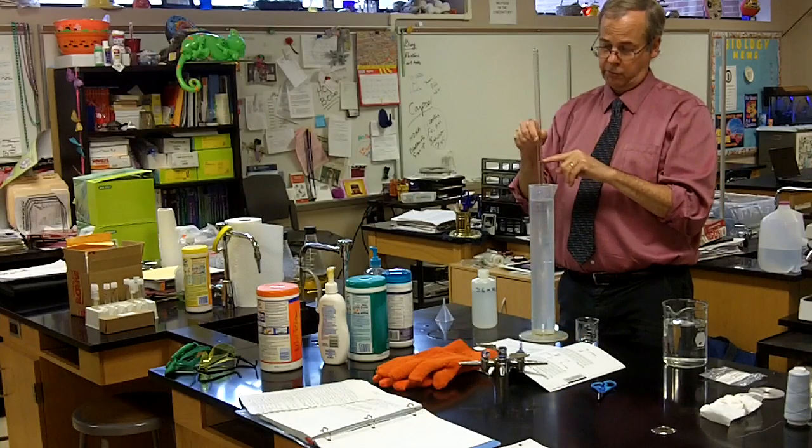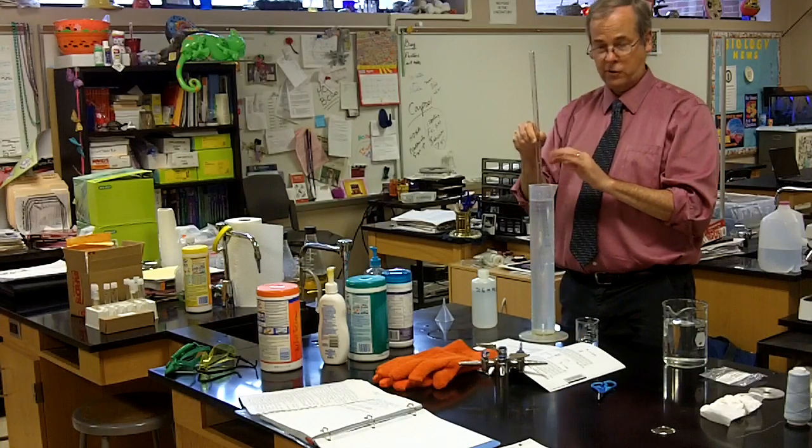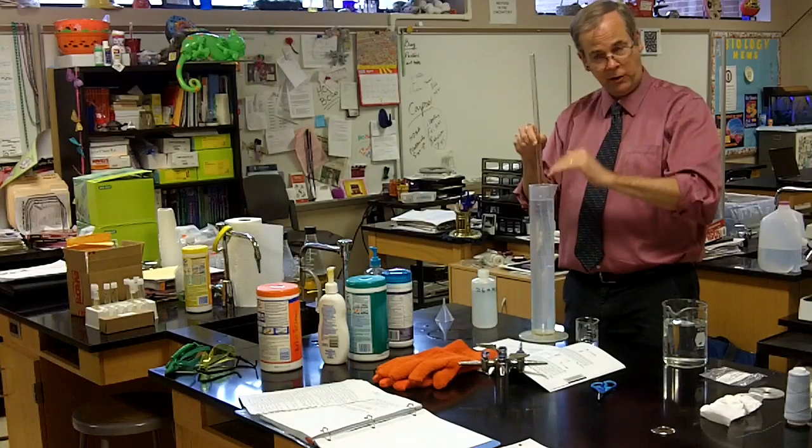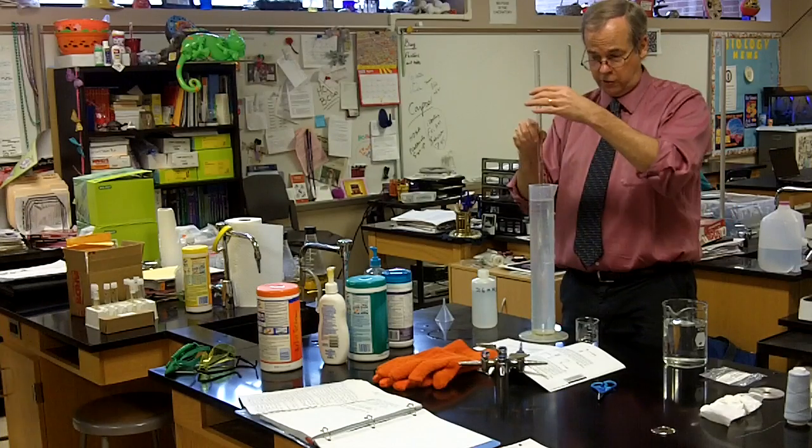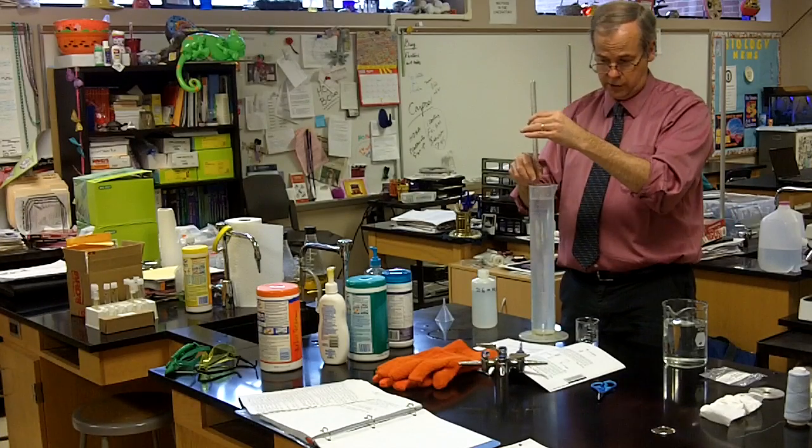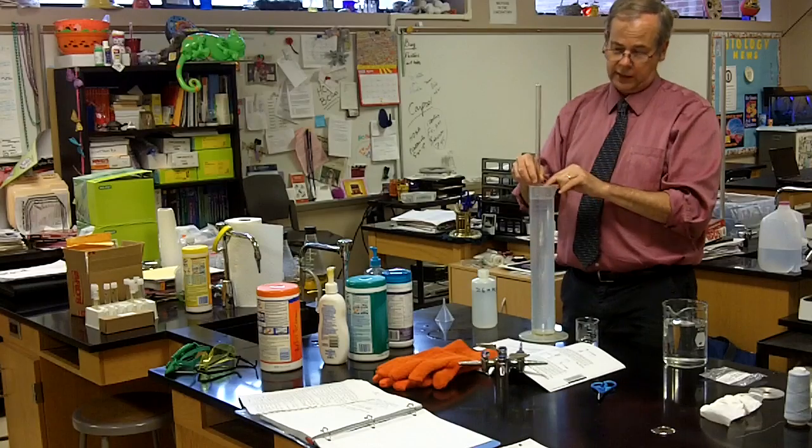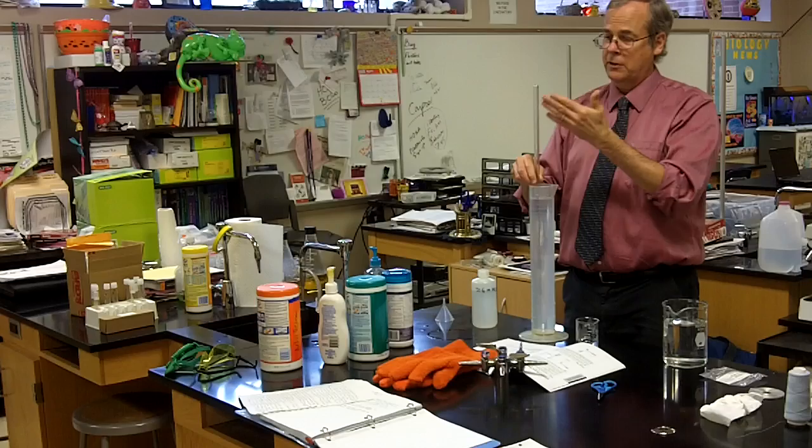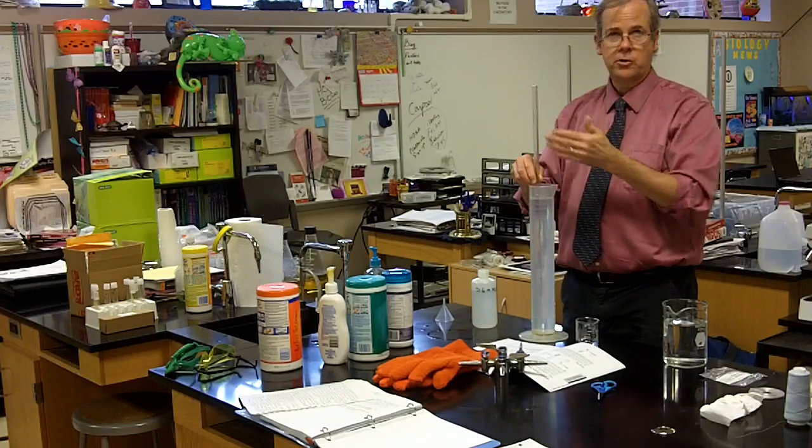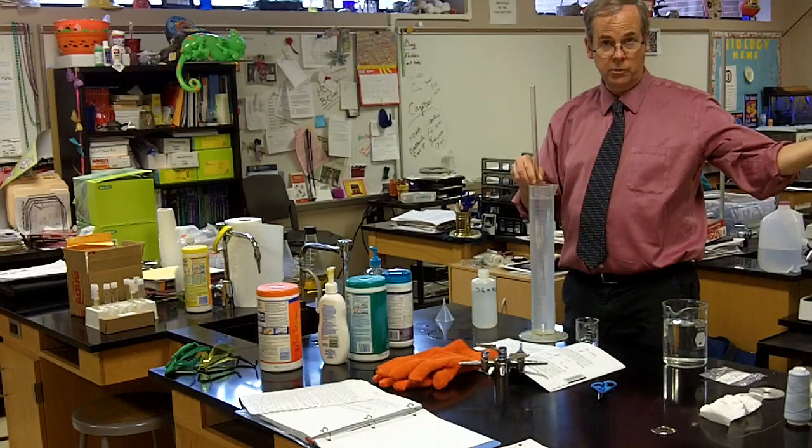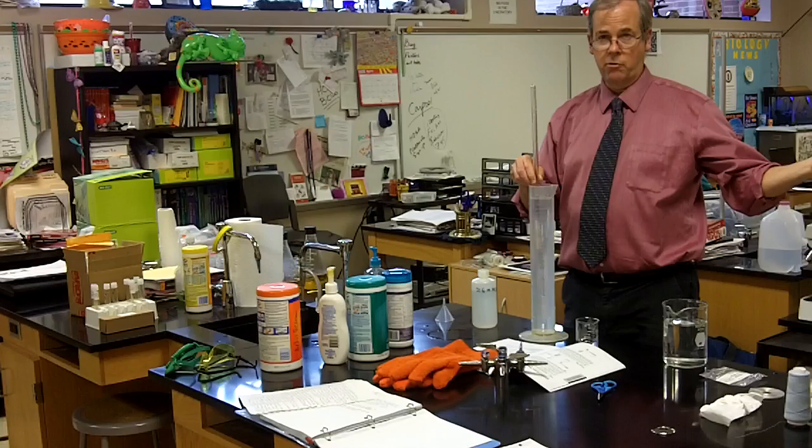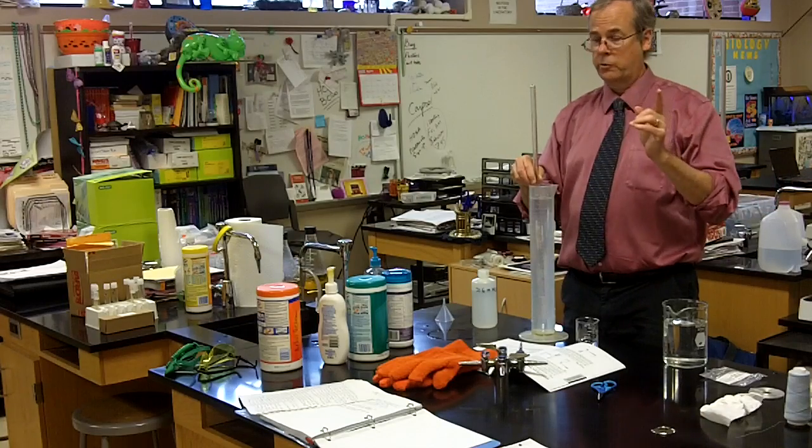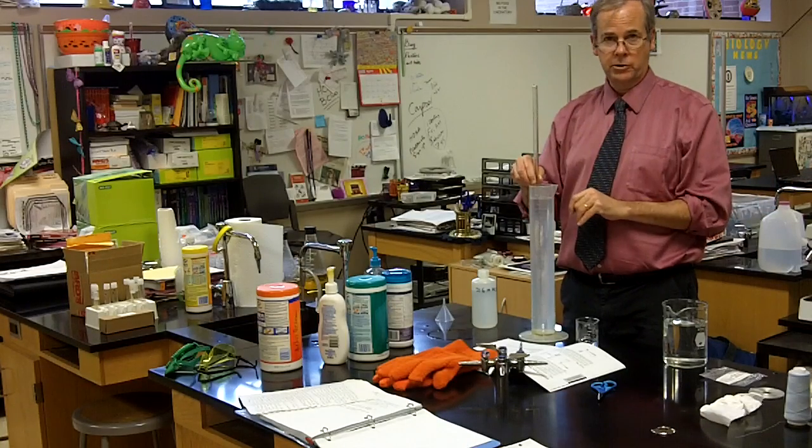So what I do is I lower the tube so that the level of water inside and outside is identical. And that means the pressure of the gas in this tube is the same as the pressure in the room. All we need to do is check a barometer, and not only do we know the pressure in the room, we now know the pressure inside the tube.